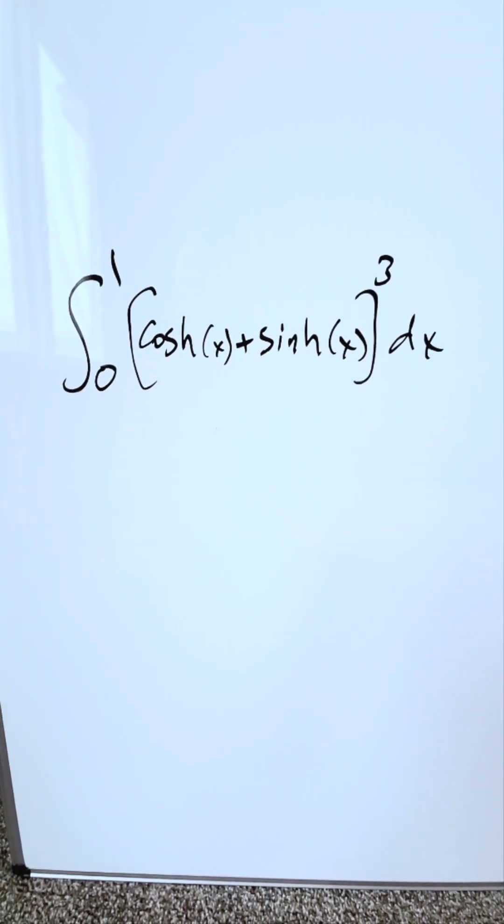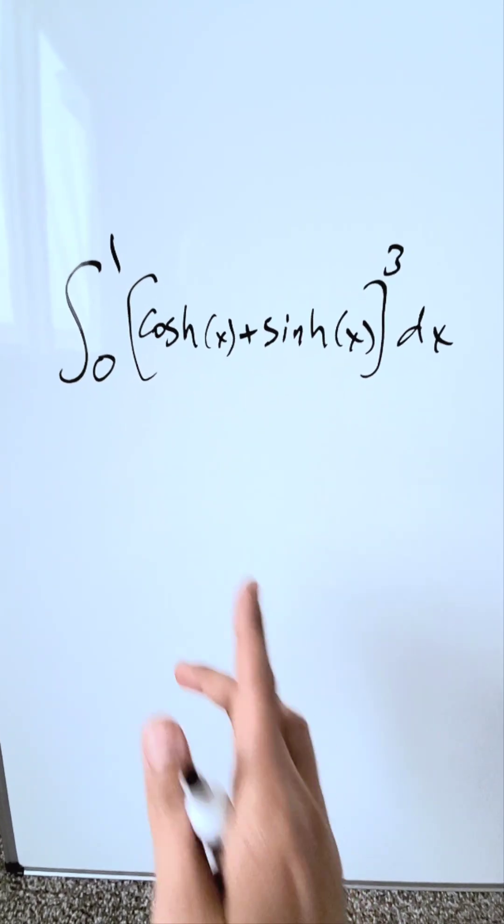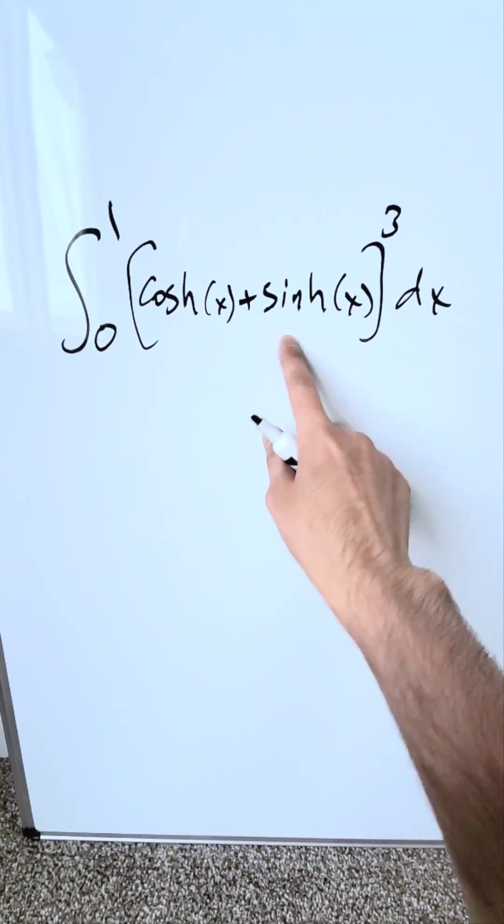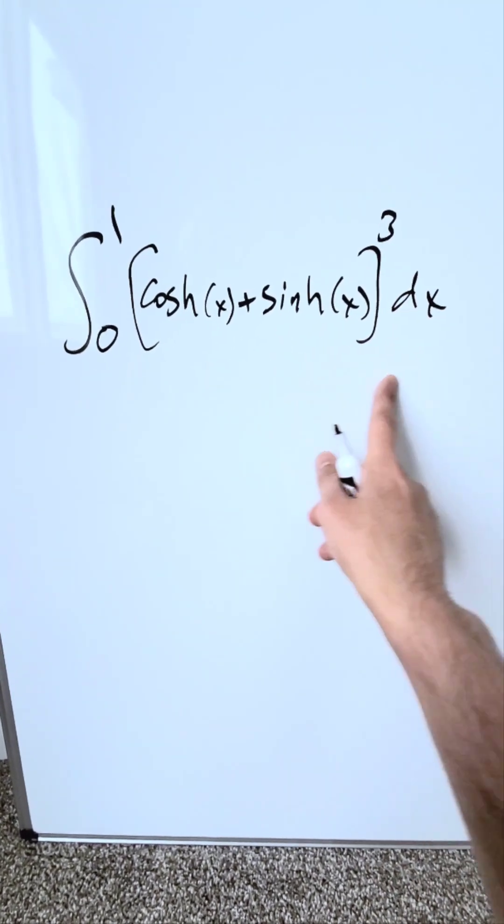We are looking at a very interesting hyperbolic integral. What do I have? From 0 to 1, hyperbolic cosine x plus hyperbolic sine x all to the power of 3, dx.